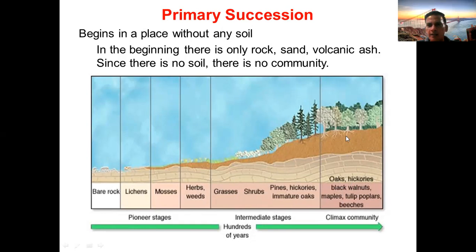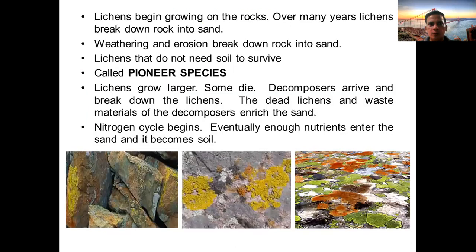Finally, we see complete oaks, hickories, walnuts, maple, and different other kinds of trees. So initially there was bare rock, and now we can see dense forest — this final community is called the climax community. Life starts from bare rock and finishes at mature forests. Lichens begin to grow on the rocks, and over many years lichens break down rock into sand. Weathering and erosion of these rocks, as well as the presence of lichens, lead to the formation of soil. Lichens do not need soil to survive.